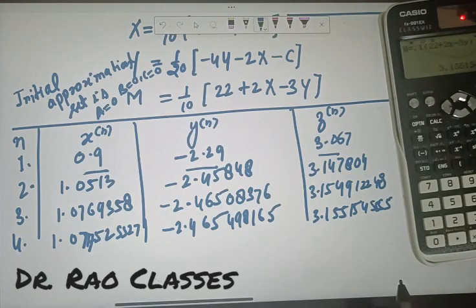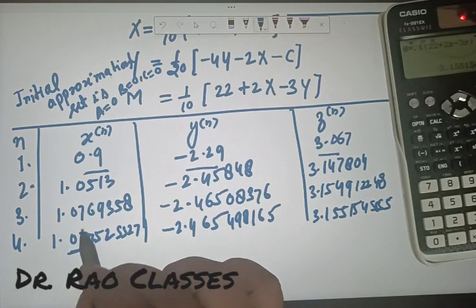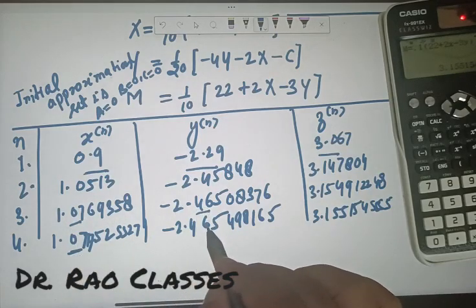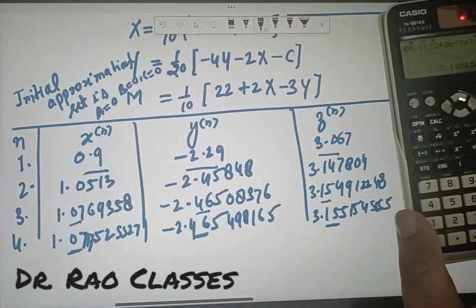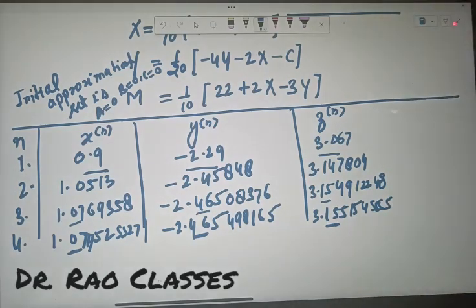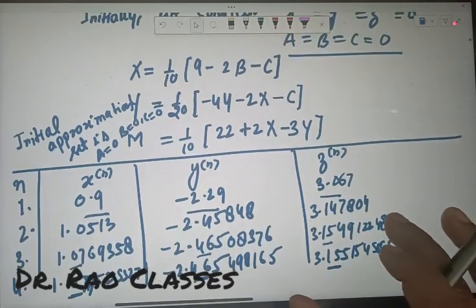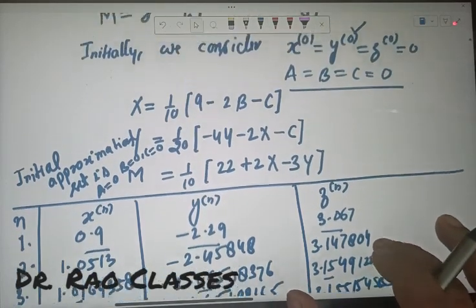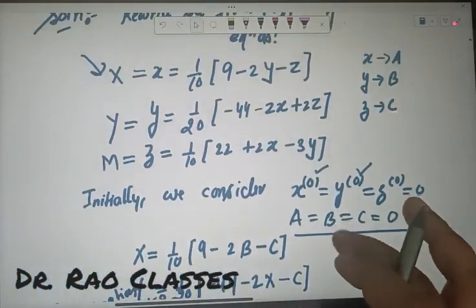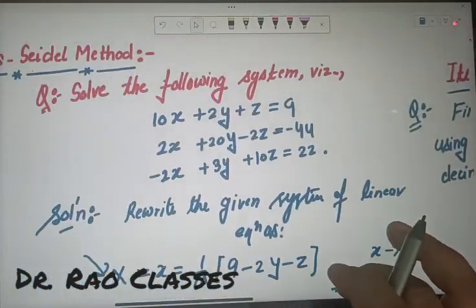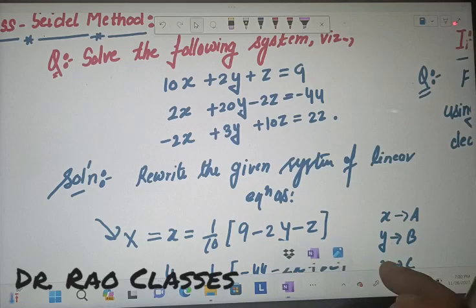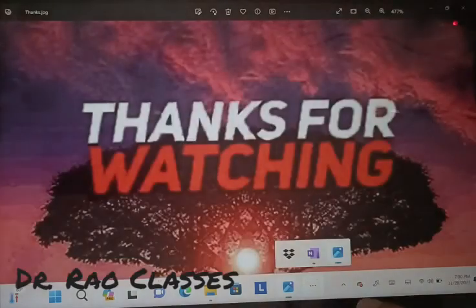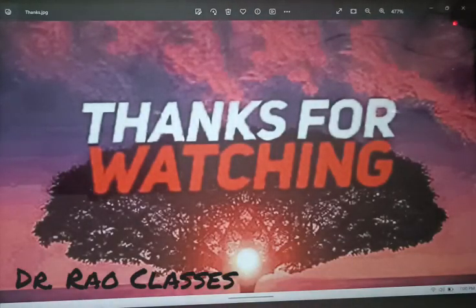You can see the values are correct up to two decimal places — every parameter has converged to two decimal place accuracy. By this process you can find up to the 10th, 11th, or 12th iteration in just a few minutes. I hope you enjoyed this method. Please subscribe to my channel, and thank you very much for watching. See you in the next video with interesting content.